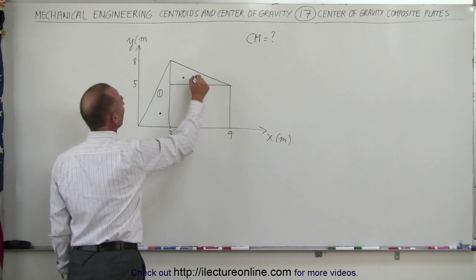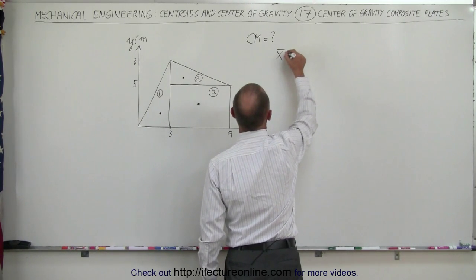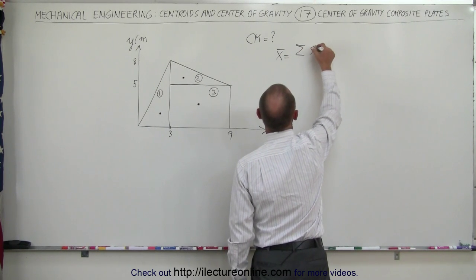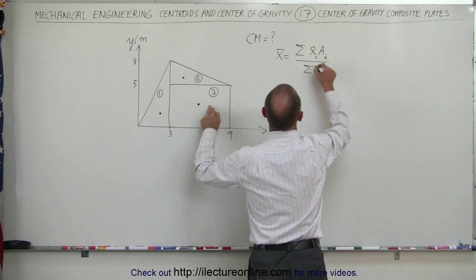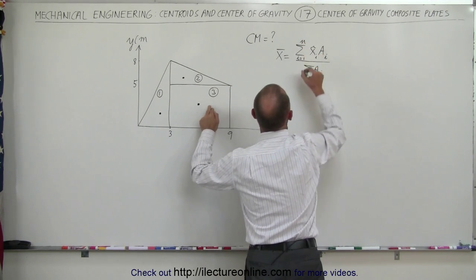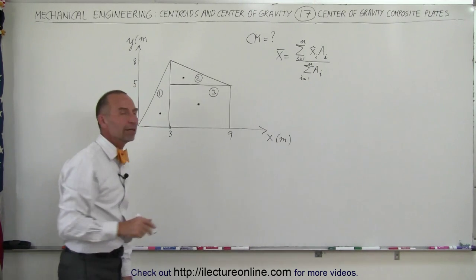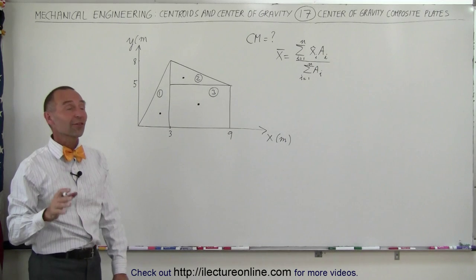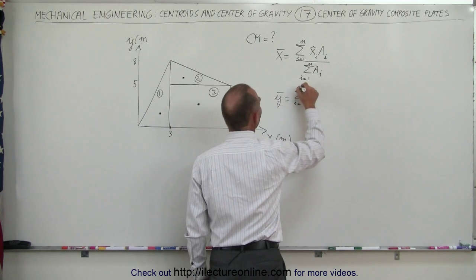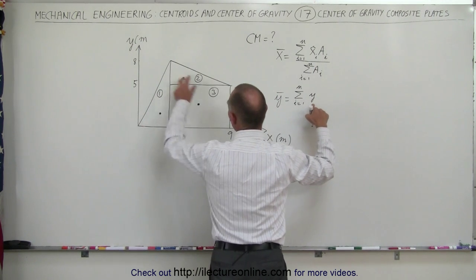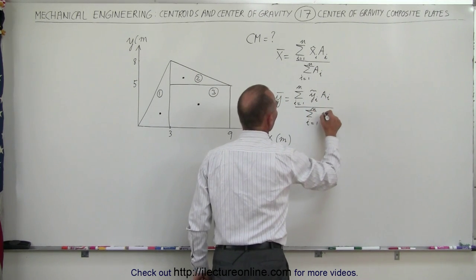Let's call this object number 1, number 2, and number 3. To find the x and y coordinates of the center of mass: the x-coordinate is equal to the sum of all the x-coordinates of the center of mass of each individual piece multiplied by the area of each piece, divided by the sum of all the areas — from i equals 1 to n. We do the same for the y-coordinate of the center of mass.